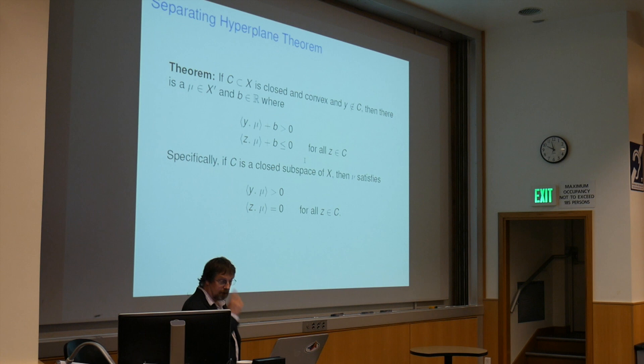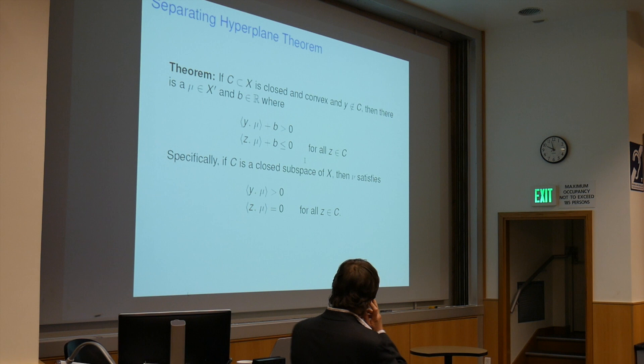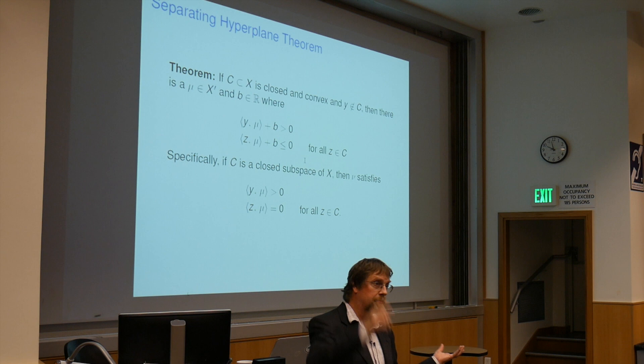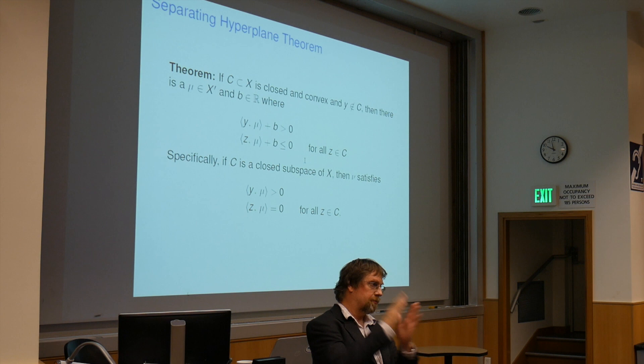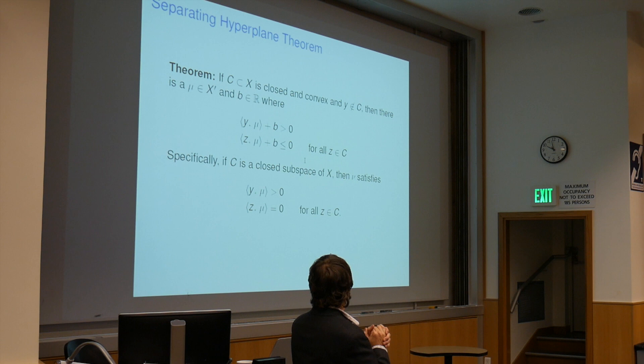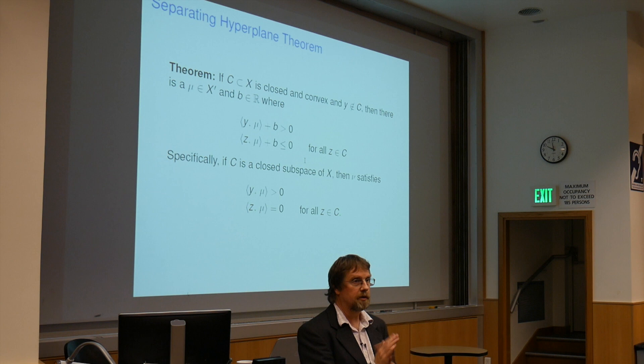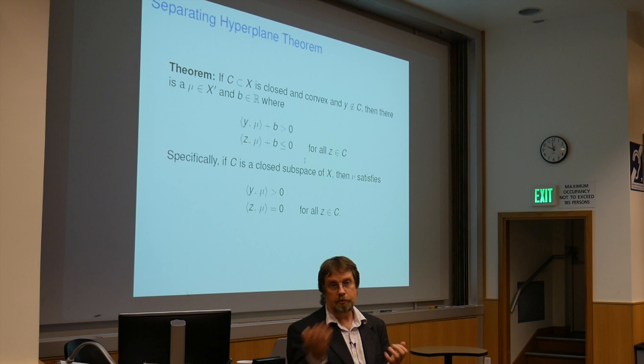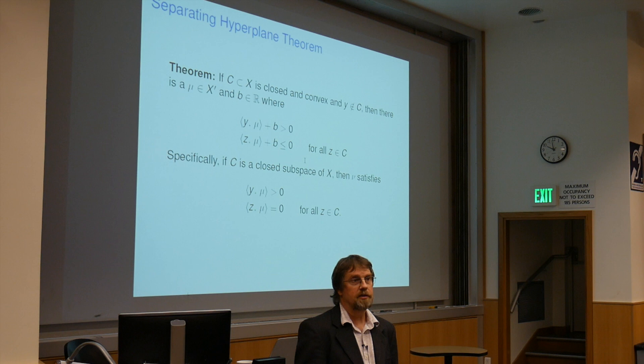So the main tool here is the separating hyperplane theorem. If you've got a closed and convex set and you've got a point not in the set, then there is a separating hyperplane that strictly separates one from the other. Now the mu, the vector that gives you almost the normal for the separating hyperplane, is going to be in the dual space. And the dual space, the space of continuous functions on a hypercube, is a set of Borel measures on that same hypercube.